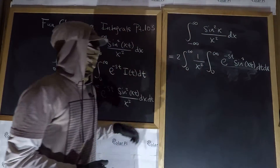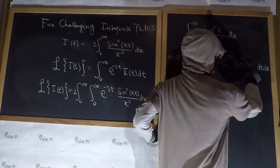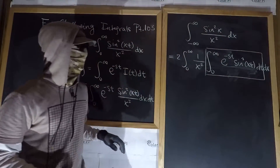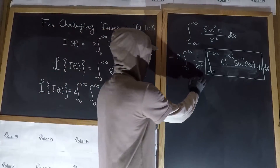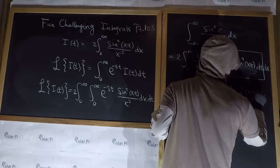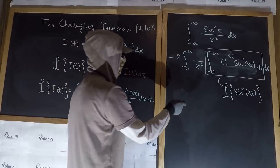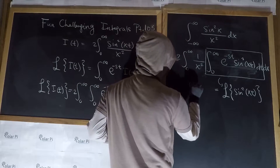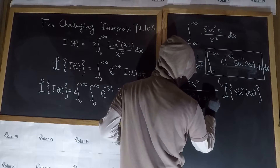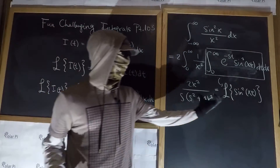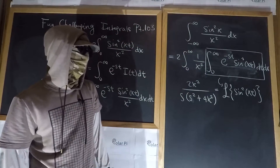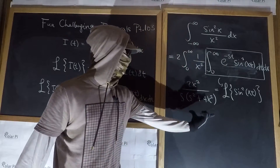So I could write 2 integral 0 to infinity, and I could write 1 over x squared right here. Notice now that what I have here — specifically the integral with the dt — is a Laplace transform of sine squared of xt. What I just boxed right here is the Laplace transform of sine squared of xt. And the Laplace transform of sine squared of xt is equal to 2x squared divided by s times s squared plus 4x squared. So we can replace what's boxed here with this expression.